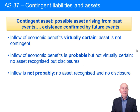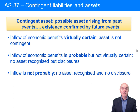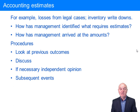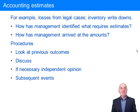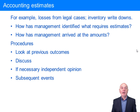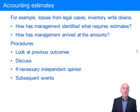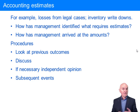By and large, you have to get information from experts — the commonest example by far is some sort of legal dispute. While we're dealing with estimates, let's look at how you would audit accounting estimates. These include losses from legal cases, inventory write-downs, and estimating profits from long-term contracts. As auditors, we should see how management has identified what requires an estimate and how management has arrived at the amount. After all, management are the experts in their business and should know, with the help of legal advisors, how likely they are to have to pay or receive compensation.